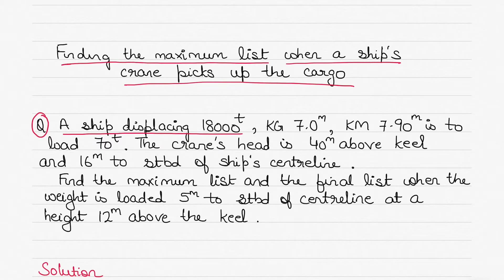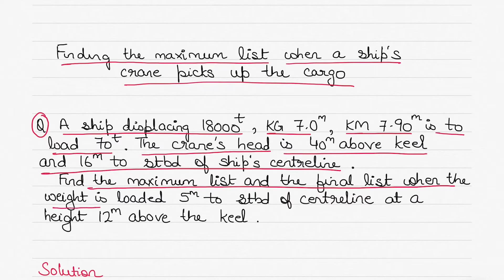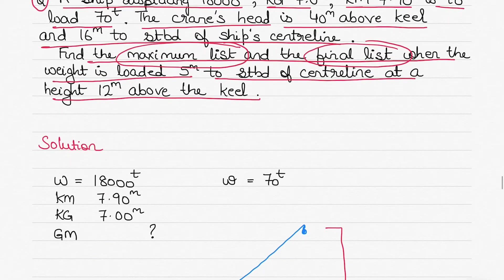In today's question there is a ship displacing 18,000 tons, KG 7 meters, KM 7.9 meters, and it is required to load 70 tons. The ship's crane head is 40 meters above the keel and 16 meters to starboard of the center line. You have to find two things: the maximum list - which is when the crane picks up the cargo - and the final list - which is when the cargo is placed on the ship.